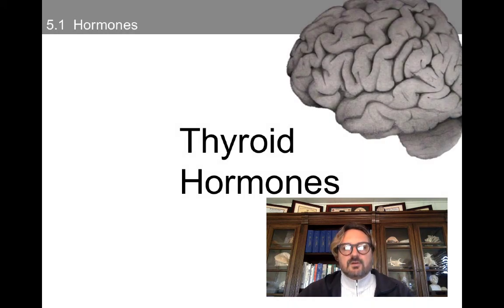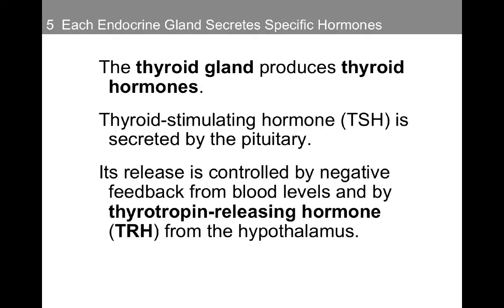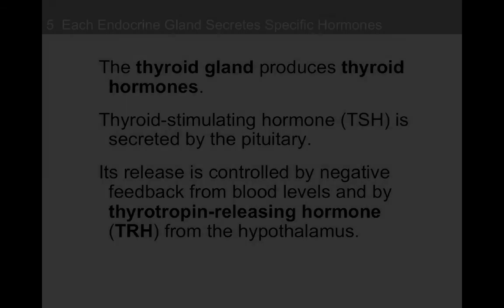Now that we've talked about adrenal hormones, I'd like to talk about thyroid hormones. Thyrotropin-releasing hormone is released by the hypothalamus. It triggers the release of thyroid-stimulating hormone from the pituitary gland, and thyroid-stimulating hormone travels to the thyroid, where it triggers the release of thyroid hormones. The thyroid gland produces thyroid hormones, and thyroid-stimulating hormone is secreted by the pituitary — its release is controlled by negative feedback from blood vessels and by thyrotropin-releasing hormone from the hypothalamus.